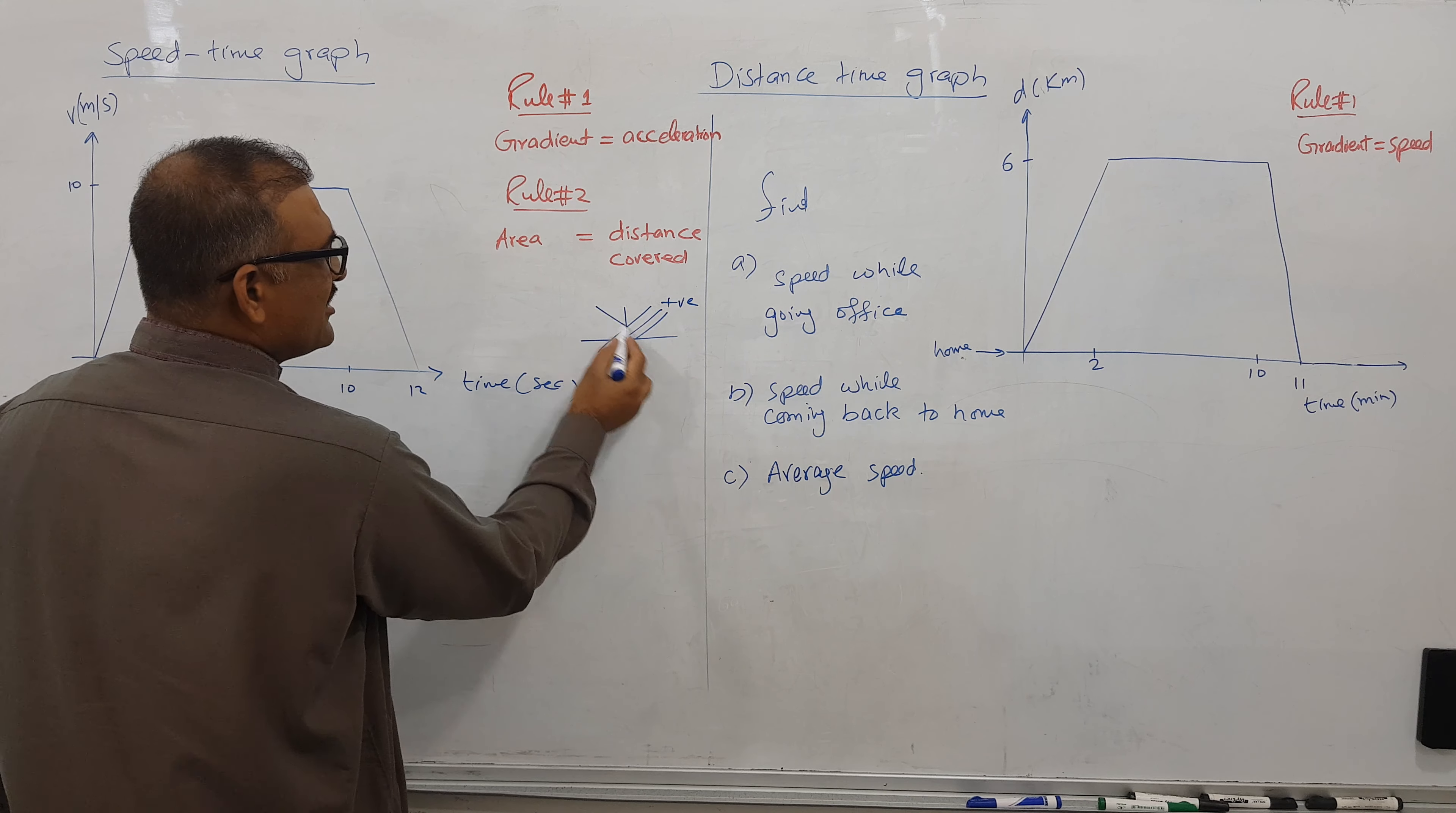At this point, x is 2, y is 10. At this point, x is 0, y is 0. Let's find the gradient. M is equal to y2 minus y1 over x2 minus x1. So 10 minus 0 over 2 minus 0, I get 5 meter per second squared for acceleration.